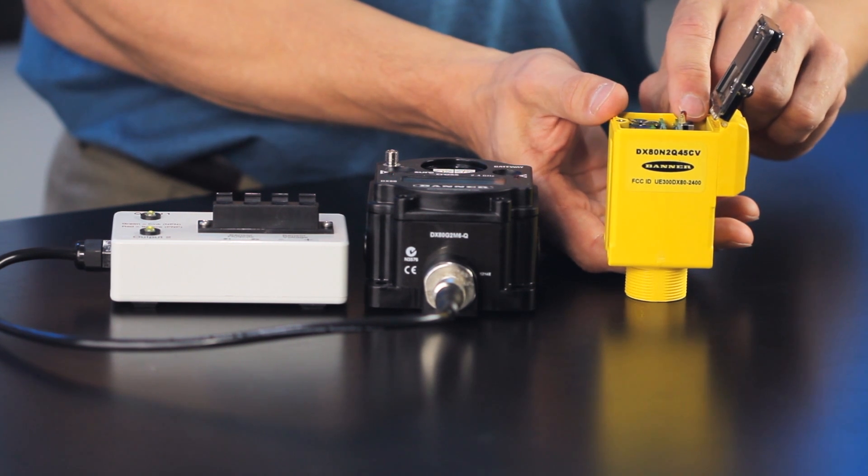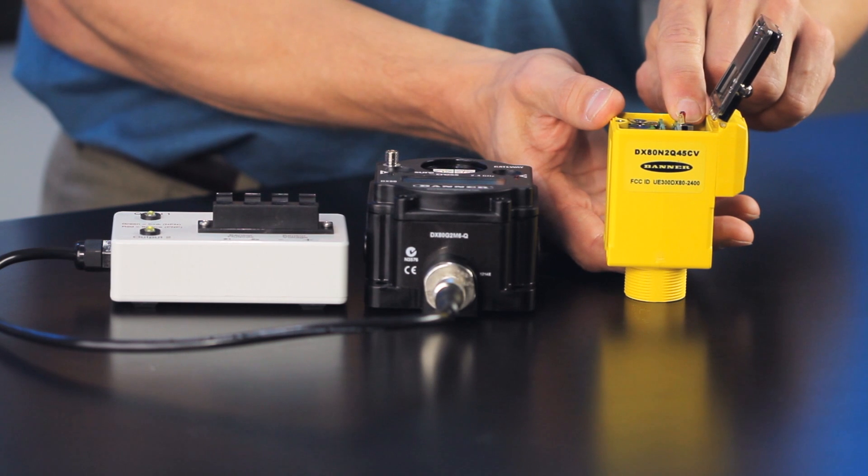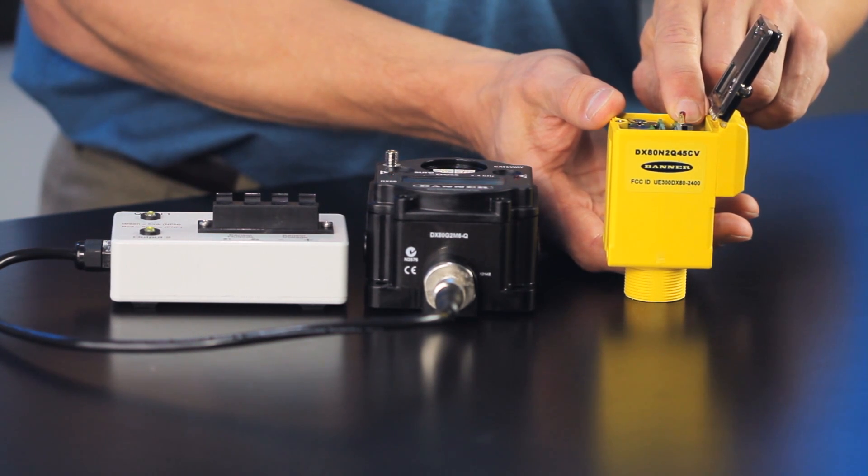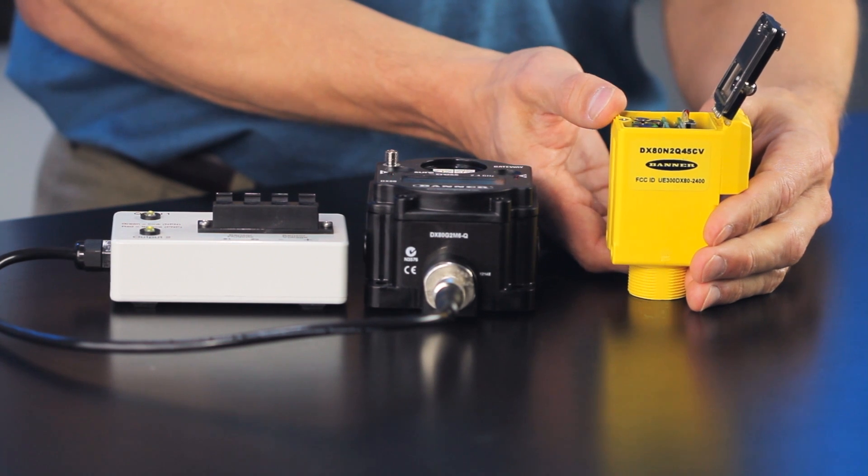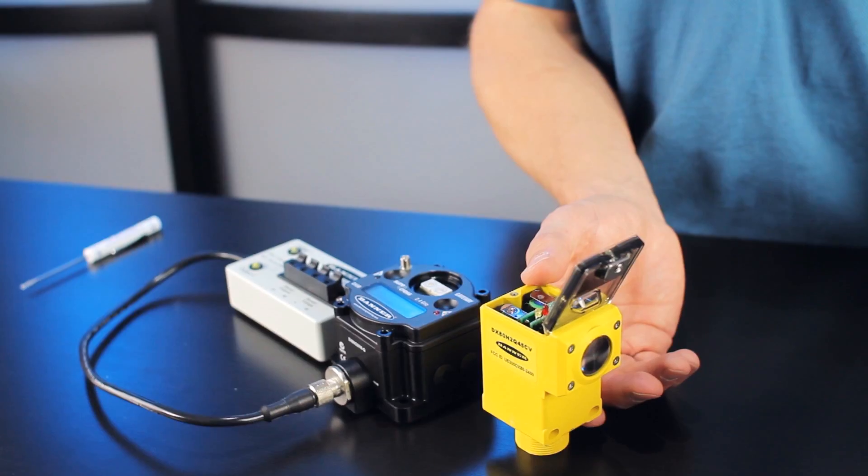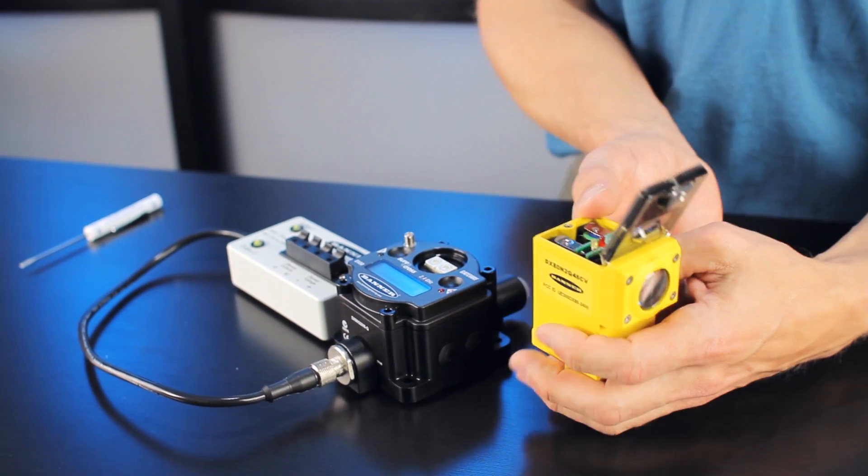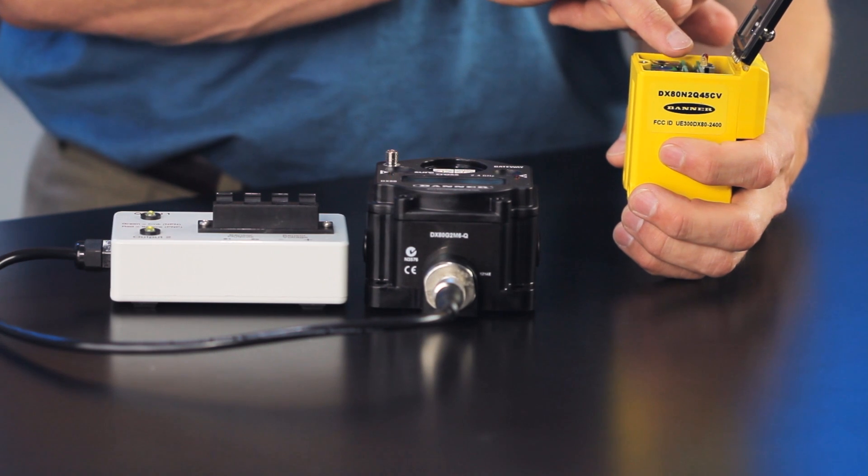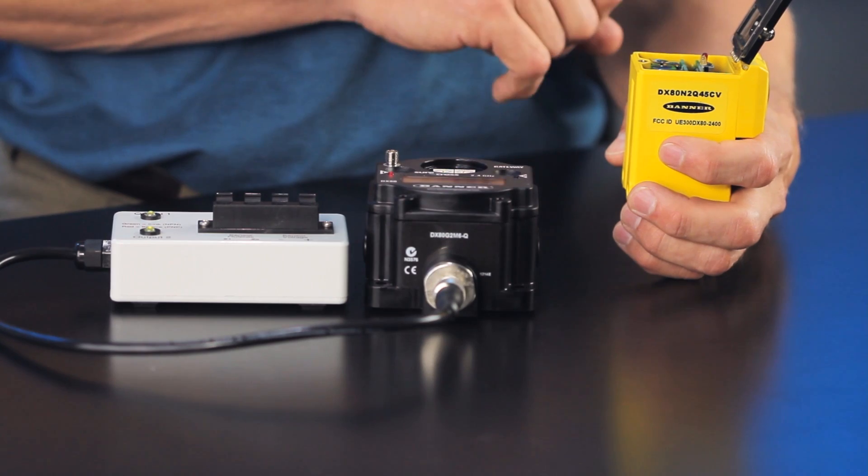The first step with the sensor is to hold the button for five seconds, which turns the sensor on. Now you'll notice the yellow LED shows when there's a target in front of the sensor, and the red LED shows that it's not connected to a gateway yet. That shows the RF link.